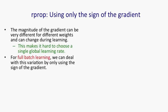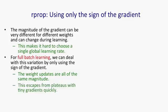RProp is an interesting way of trying to deal with the fact that gradients vary widely in their magnitudes. Some gradients can be tiny and others can be huge, and that makes it hard to choose a single global learning rate. If we're doing full batch learning, we can cope with this big variation in gradients by just using the sign of the gradient. That makes all of the weight updates be the same size. For escaping from plateaus with very small gradients, this is a great technique, because even with tiny gradients we'll take quite big steps. We couldn't achieve that just by turning up the learning rate, because then the steps for weights with big gradients would be much too big.